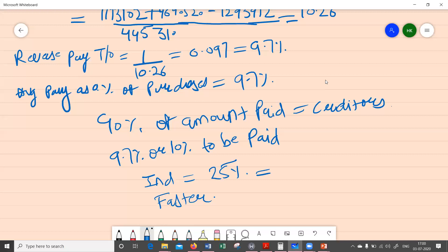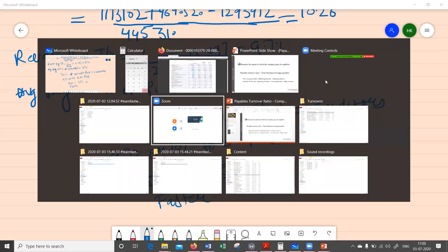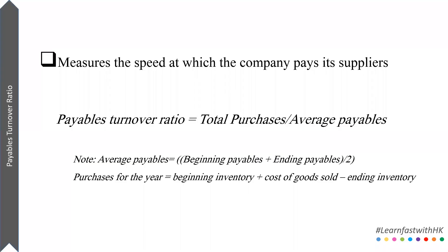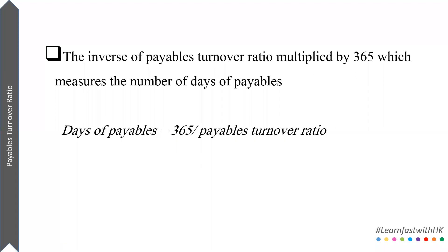A related ratio to this is Days Payable Outstanding. It is very much related to payables turnover and gives the same picture. Days of Payables equals 365 divided by the payables turnover ratio, which is the number of days in a year. This ratio tells you the number of days a company takes to pay off its creditors.